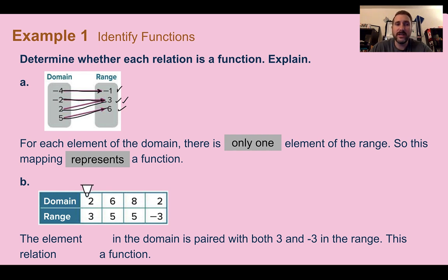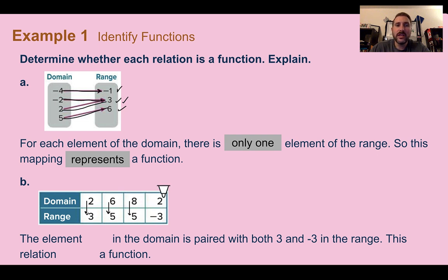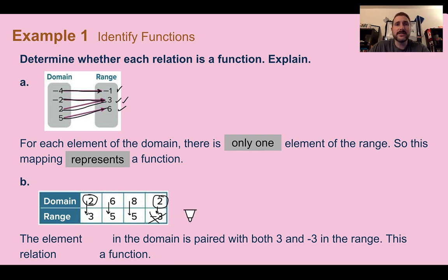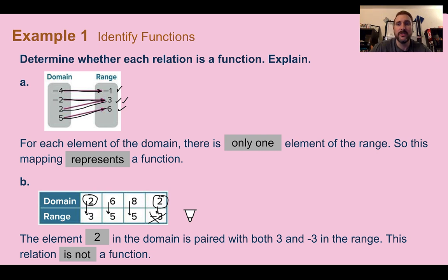For part b, we're given a table. We check: does 2 only go to 3? Yes. Does 6 only go to 5? Yes. Does 8 only go to 5? Yes. But then 2 appears again — I already had it the first time. The first time it went to 3, but this time it goes to negative 3 — something different. So that is not a function because the element 2 goes to both 3 and negative 3 in the range.